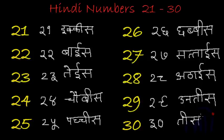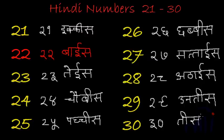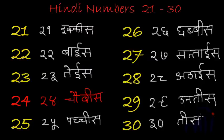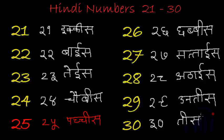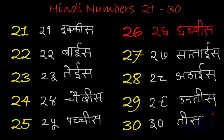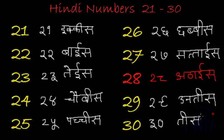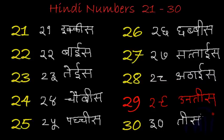Now let's repeat the numbers once again. The numbers are: ikkis, baais, teis, chaubis, pachis, chabbis, sataais, athaais, unntis, tis.